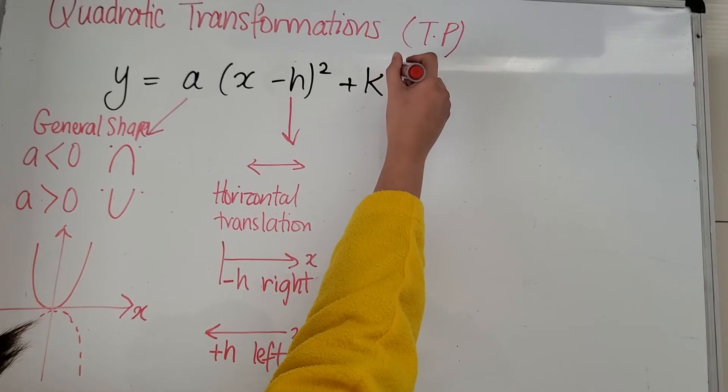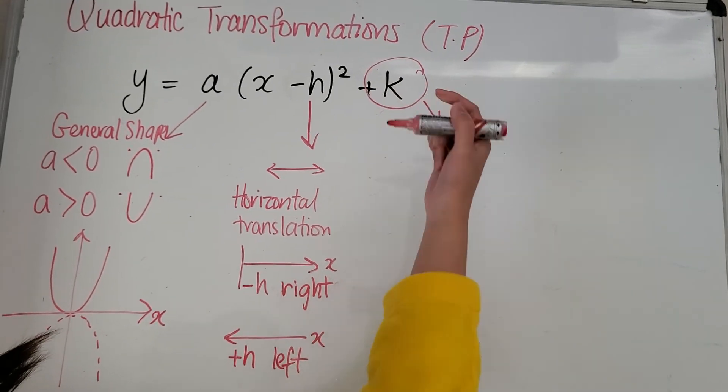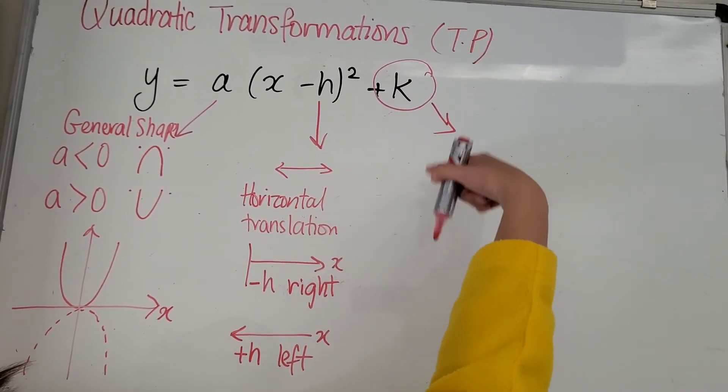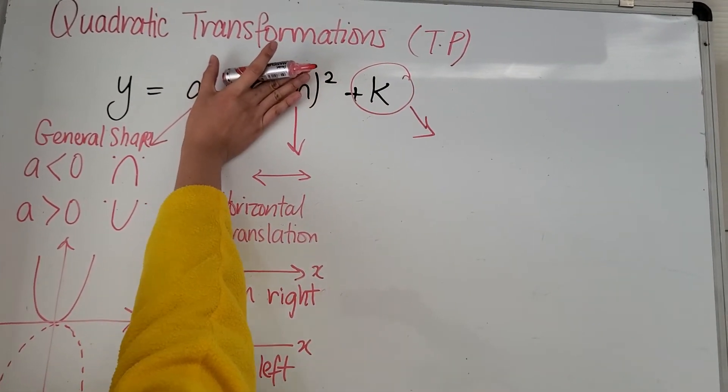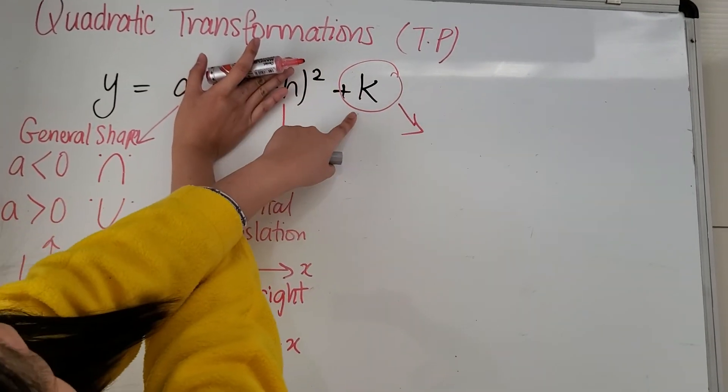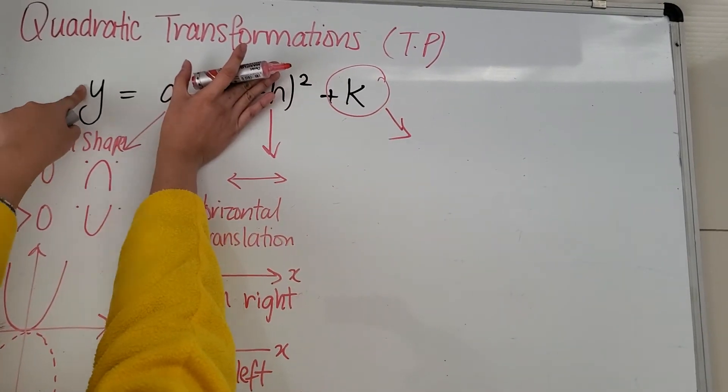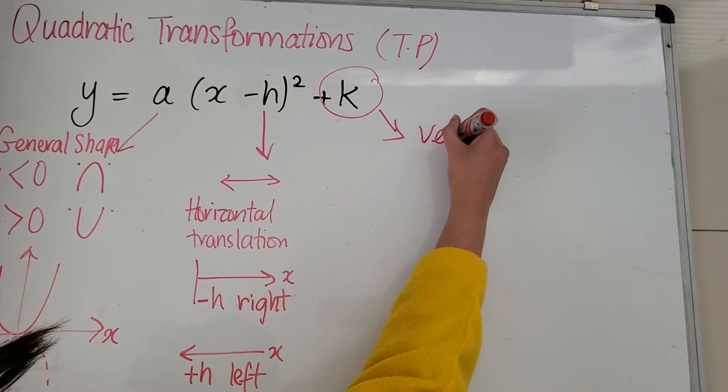Now, finally, your k tells you your upward translation. So now you've got your x covered. You still have your y, which means your k will affect your y translation. That's your vertical translation.